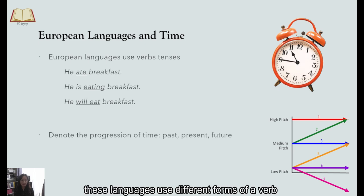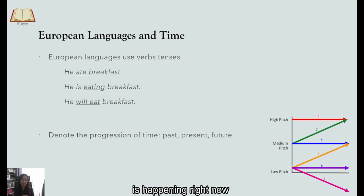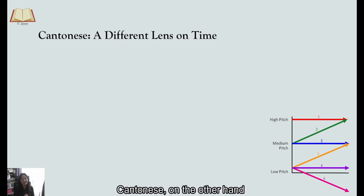So essentially, these languages use different forms of a verb to show whether something is happening in the past, is happening right now or will happen in the future. Now Cantonese, on the other hand, employs a different strategy.